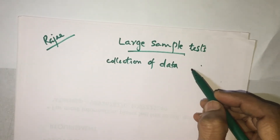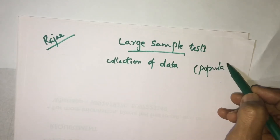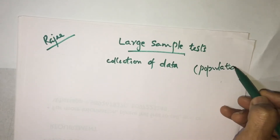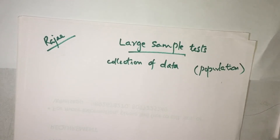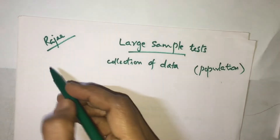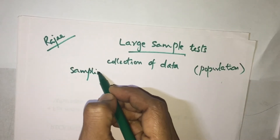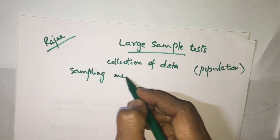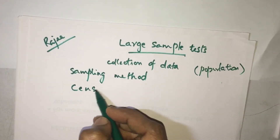In turn, we call the objects under study as a 'population.' There are mainly two methods to do this collection of data: one is the sampling method and the other is the census method.